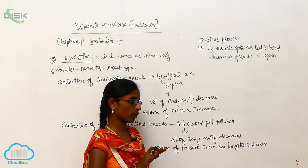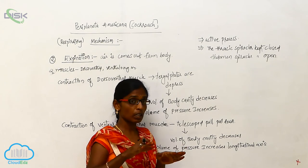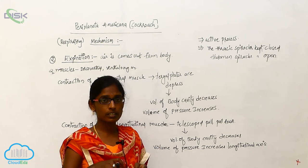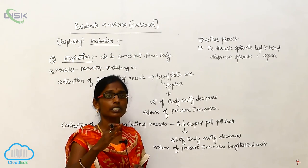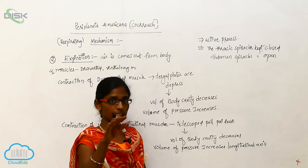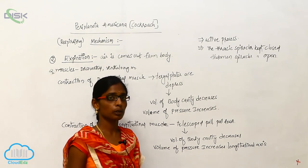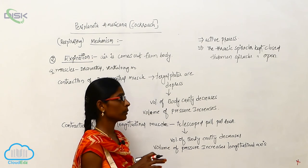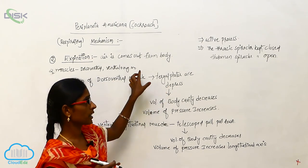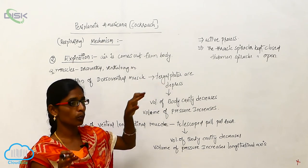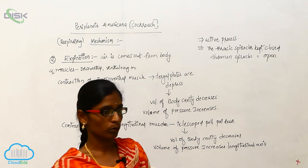Contraction of the ventral longitudinal muscle causes the telescope segments to pull down, decreasing body cavity volume and increasing pressure along the longitudinal axis. It is an active process. The thoracic spiracles are kept closed and the abdomen spiracles are kept open during expiration.